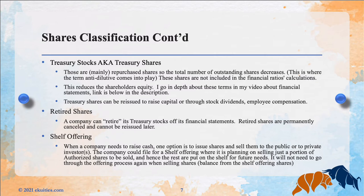In any company, you have assets and you have liabilities plus equity. Equity is the shareholders' wealth in the company. For example, if a company has one million dollars of assets and liabilities of 500,000, then the shareholders' equity is 500,000. Treasury shares can be reissued to raise capital, through stock dividends, or for employee compensation.